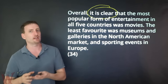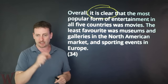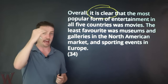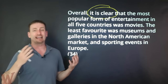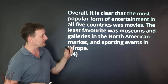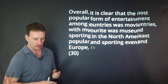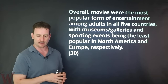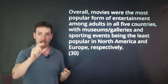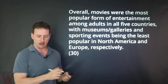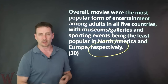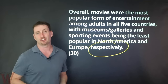It's not wrong, but if you can avoid it, avoid it. If you do use this structure in the overview — 'it is clear,' 'it can be seen in the graph, in the table,' etc. — make sure that you don't use it again in your body. Use it once, don't use it again. Ideally, don't use it at all. Now I want to show you another way to write this overview statement using one sentence without that 'it is clear' structure. 'Overall, movies were the most popular form of entertainment among adults in all five countries, with museums and galleries and sporting events being the least popular in North America and Europe, respectively.' Four fewer words, one sentence, much more direct.